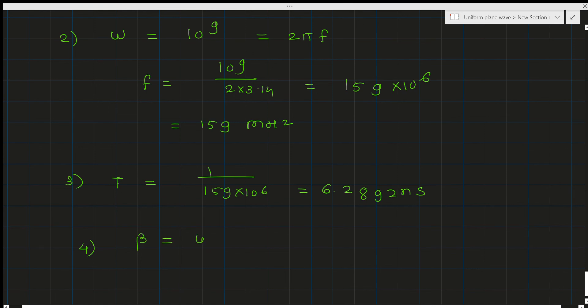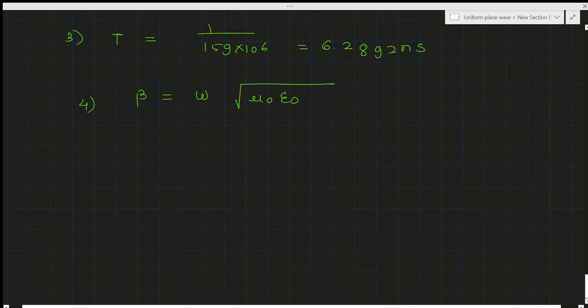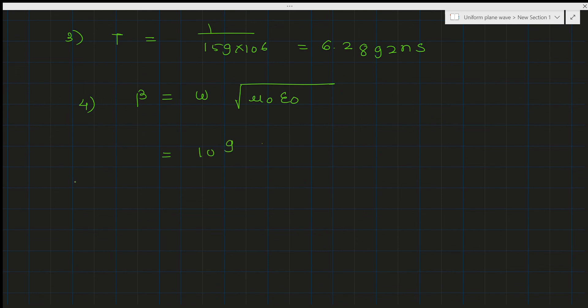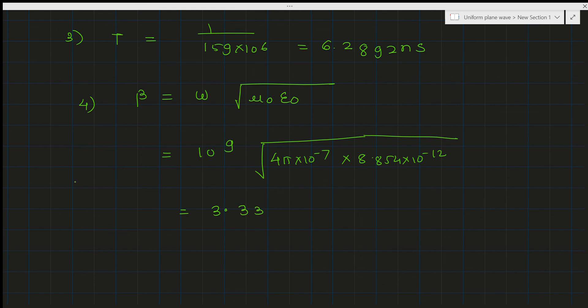Now calculating beta: beta = omega × √(mu₀ × epsilon₀) = 10^9 × √(4π × 10^−7 × 8.854 × 10^−12). The only change from the previous problem is omega is now 10^9 instead of 10^8, giving beta = 3.33 radians per meter.